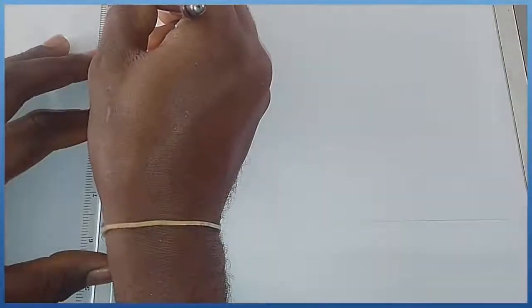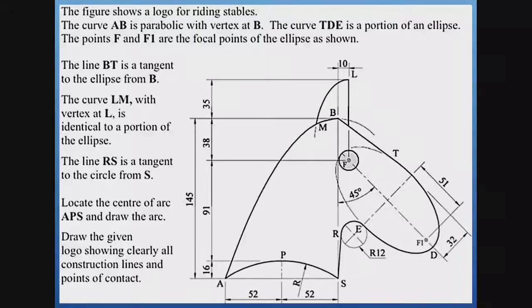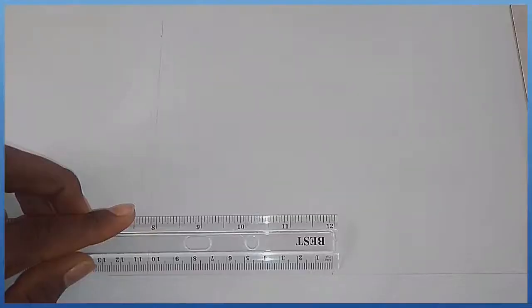We can see that the height of the parabola is 145. Then the span — 52 plus 52 — comes to 114, which is this dimension here. With this information, I can now develop the parabola.